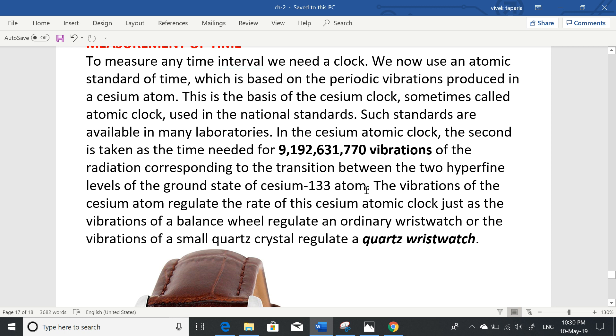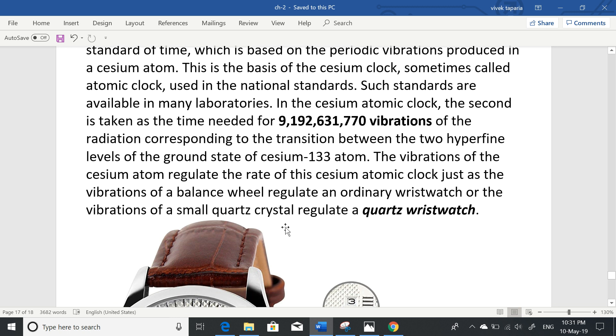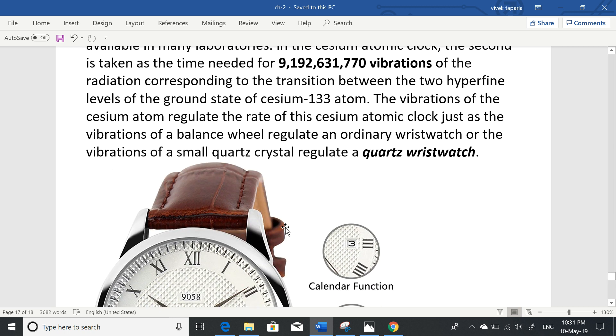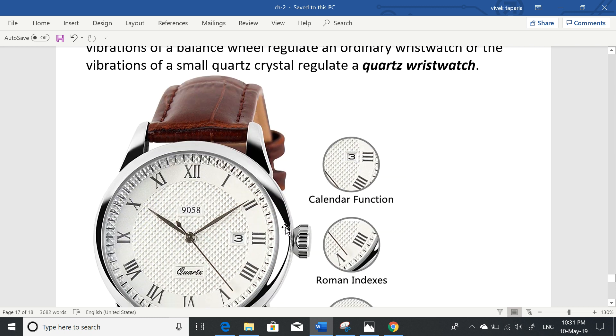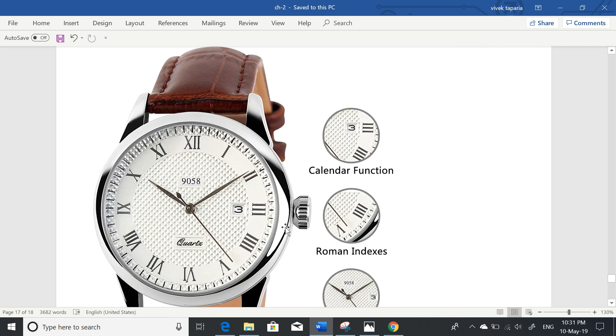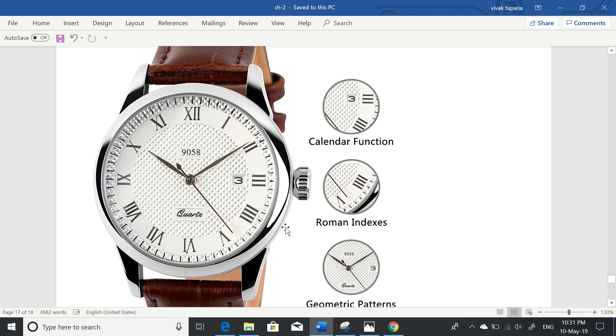The vibrations of the cesium atom regulate the rate of this cesium atomic clock just as the vibrations of a balance wheel regulate an ordinary wristwatch or the vibrations of a small quartz crystal regulate a quartz wristwatch. In quartz wristwatch, quartz crystal does the same work that balance wheel does in ordinary watch.